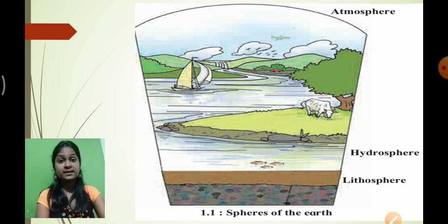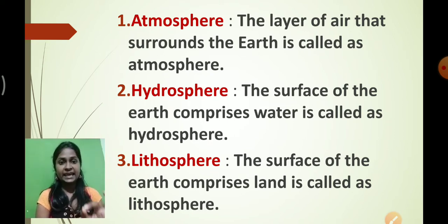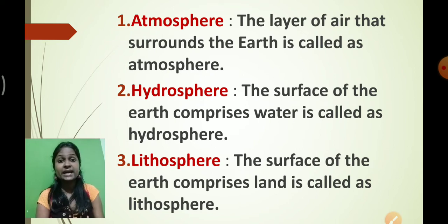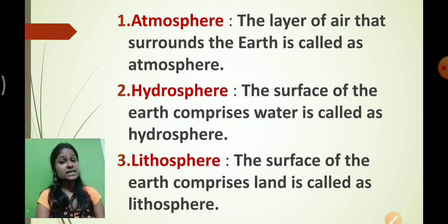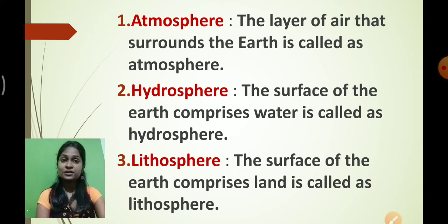For better understanding, here are the definitions. Atmosphere: the layer of air that surrounds the Earth. Hydrosphere: the surface of the Earth that comprises of water. Lithosphere: the surface of the Earth that comprises of land. Please note down and recall all these definitions.